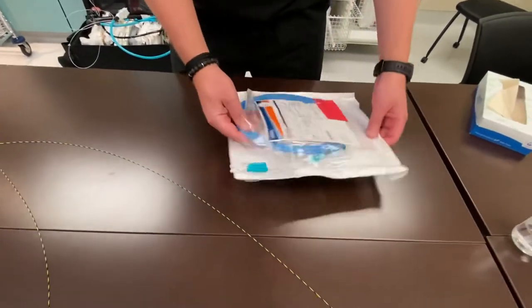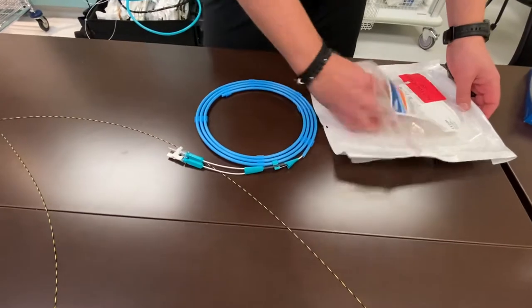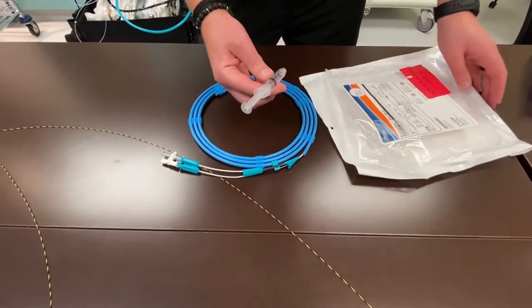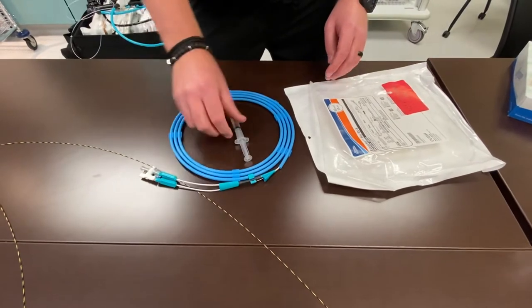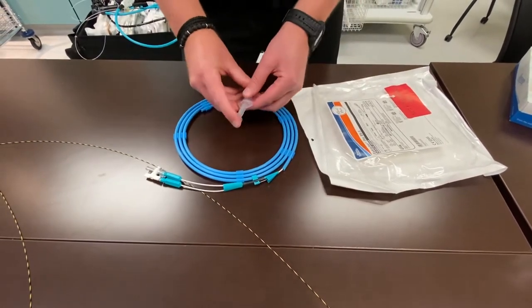After you open the package, you're going to remove the blue hula hoop, and you're also going to need to find the syringe. The syringe that comes in the package is specific to the balloon, so you have to use the syringe that comes in the package.